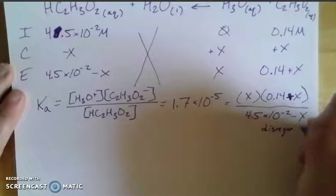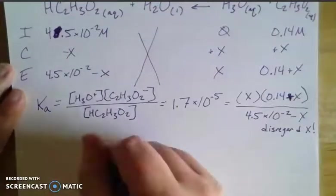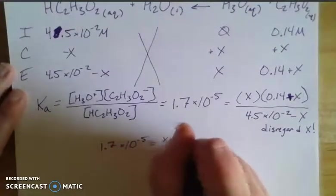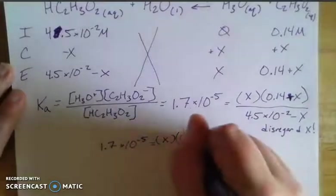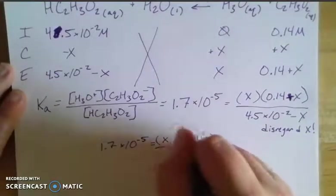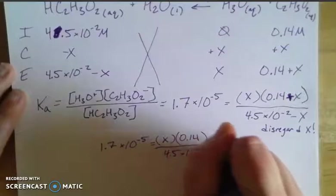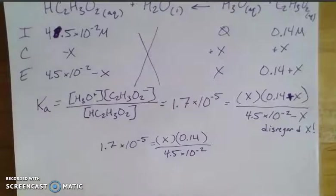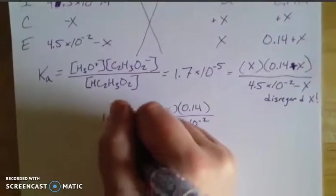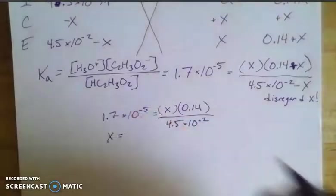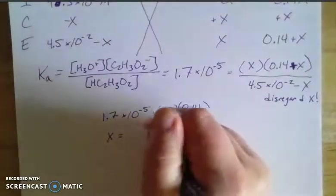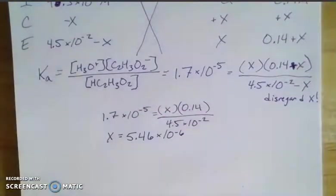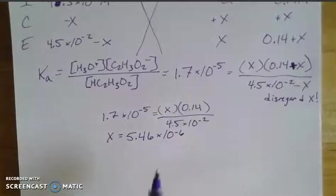But we're only disregarding x with respect to the concentrations. So that makes my equation this now. Which is cleaner, right? So then we just have some numbers here. We can divide both sides by that number. We end up with an x value. That is equal to 5.46 times 10 to the negative sixth.